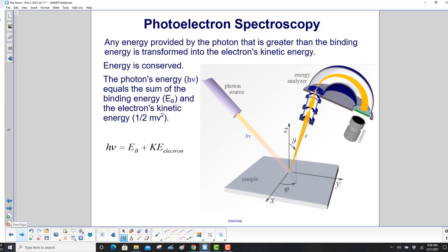Any energy provided by the photon that is greater than the binding energy is transformed into the electron's kinetic energy. That's because energy is conserved. The photon's energy, which is h nu, equals the sum of the binding energy and the electron's kinetic energy.